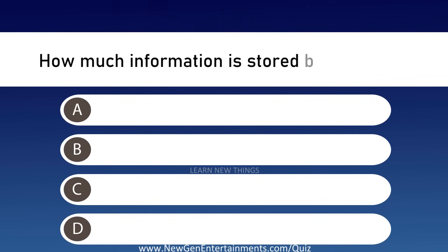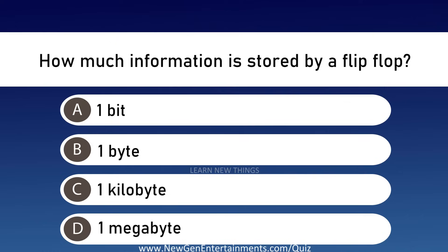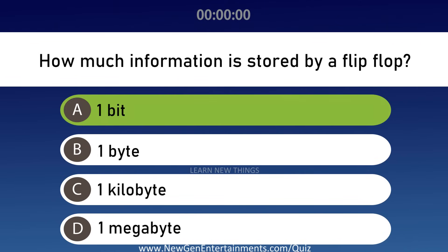How much information is stored by a flip-flop? Options are A: One bit, B: One byte, C: One kilobyte, and D: One megabyte. Answer is Option A, One bit.